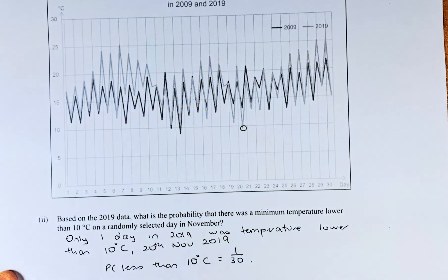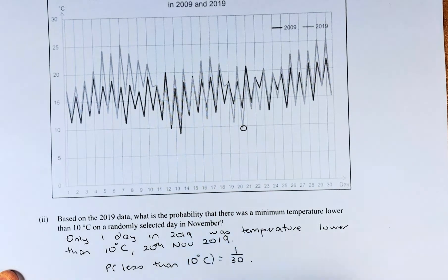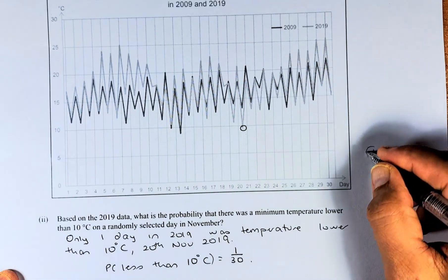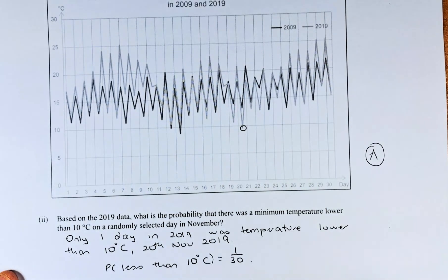So the probability that it is less than 10 degrees on that particular day is only 1 out of the 30 days. So that will give you an achieve. The probability is 1 out of 30.